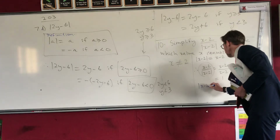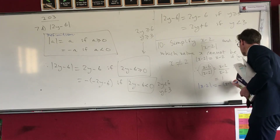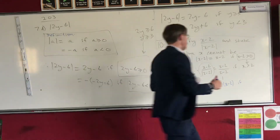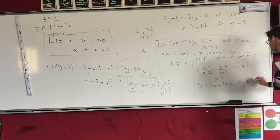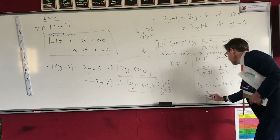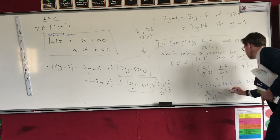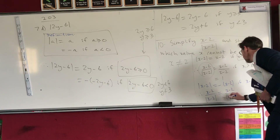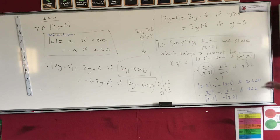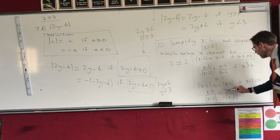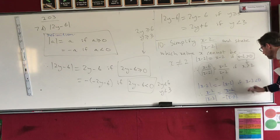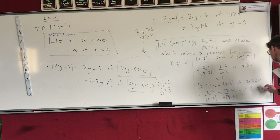The absolute value of x minus 2 equals minus (x minus 2) if x minus 2 is less than 0. Therefore, x minus 2 over the absolute value of x minus 2 equals x minus 2 over minus (x minus 2). The x minus 2 terms cancel, giving negative 1. So the expression equals negative 1 if x is less than 2.